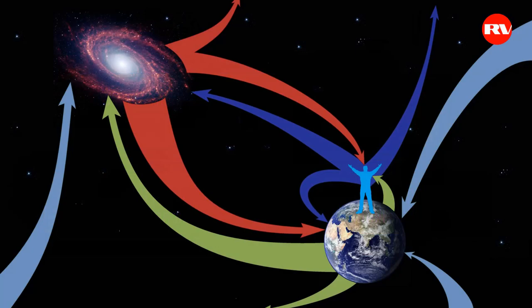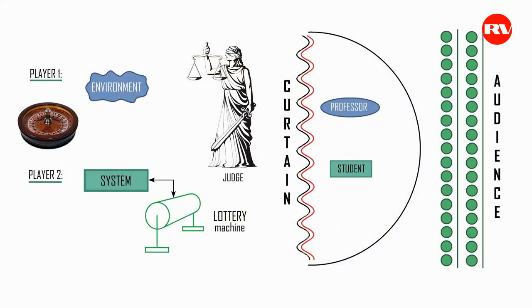Let's look into the phenomenon of intellect by using the analogy of the roulette game, however strange one may find it. As an example, let's take two players: player one is an environment professor, player two is a system student. The system involves a lottery machine. There is also a judge who makes decisions on the results of the game, all taking place behind the curtain. These players — the environment and the system — are spinning the lottery machine, and the judge is monitoring their actions. It will turn out that both the environment and the system possess intellect.